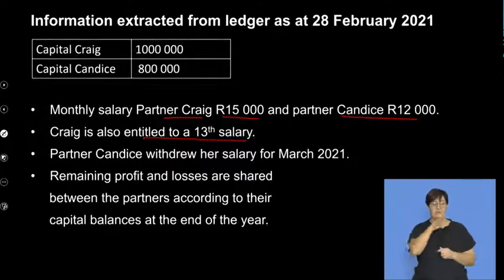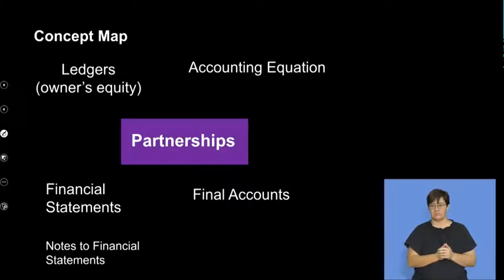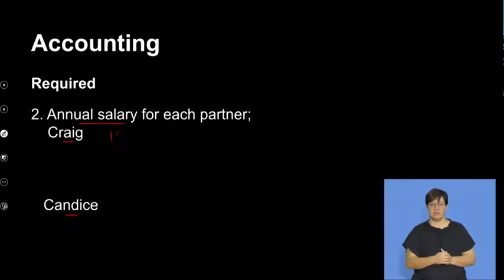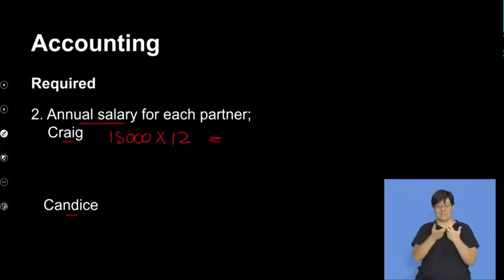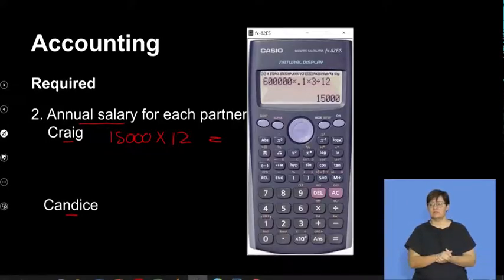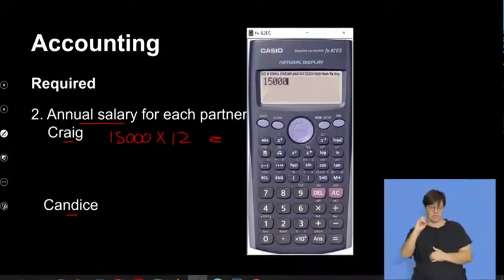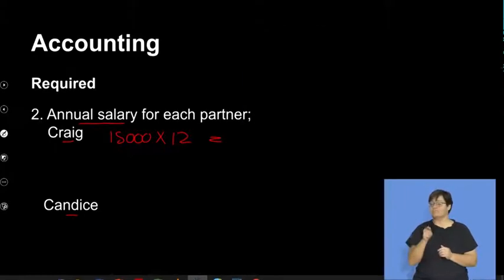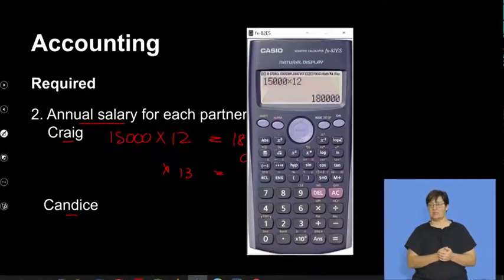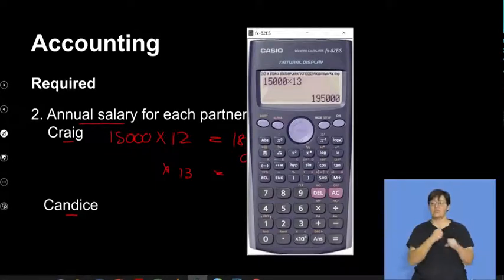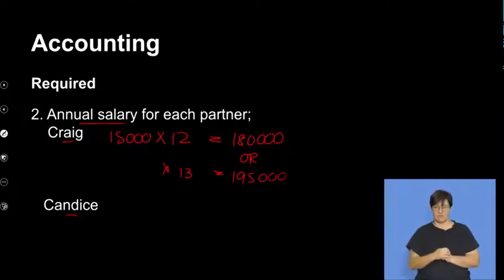Let's do that calculation: 15,000 times 12. So for partner Craig, 15,000 times 12 — remember, you could multiply this by 13. I'm going to show the bonus separately, and that gives us his annual salary: 15,000 times 12 is 180,000. Or if you multiply by 13, his annual salary would be 195,000.